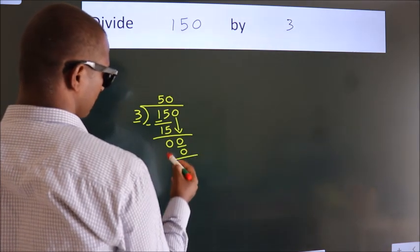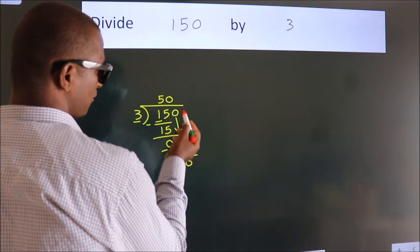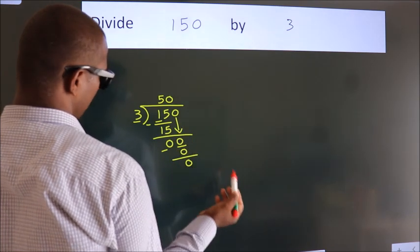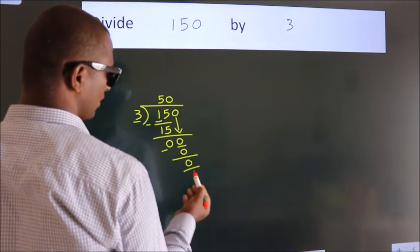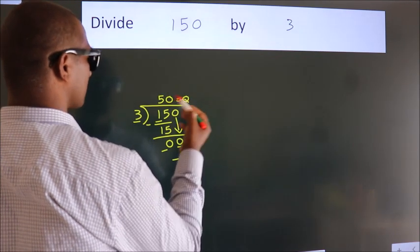Now, we subtract. We get 0. After this, no more numbers to bring it down. And we got remainder 0. So, this is our quotient.